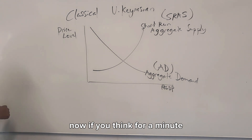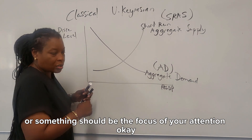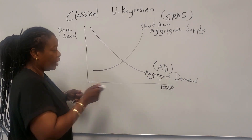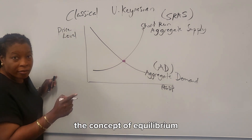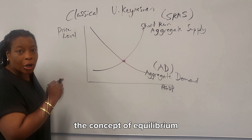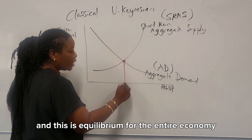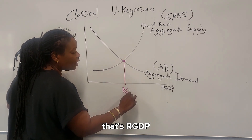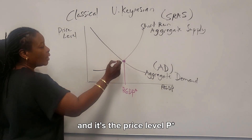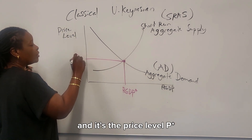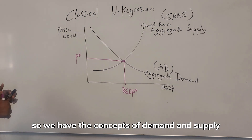Something should be the focus of your attention right here — the concept of equilibrium, and this is equilibrium for the entire economy. That gives us GDP-star — I'm going to put a star on it since it's the equilibrium — and the price level P-star. So we have the concepts of demand and supply coming together at equilibrium.